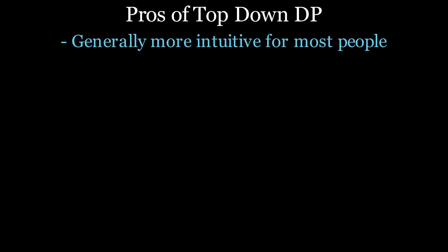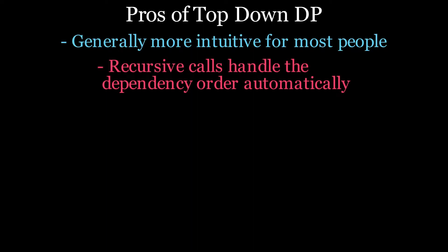But top-down dynamic programming has some pros too. The first is that for most people, it's generally more intuitive to think about a problem in terms of smaller subproblems, especially if you've come across recursion before. In some other problems, it's also not so easy to figure out the dependency order that you need to calculate the subproblems in. In top-down dynamic programming, this is handled automatically due to the recursive dispatch, where it calls dependencies on demand.